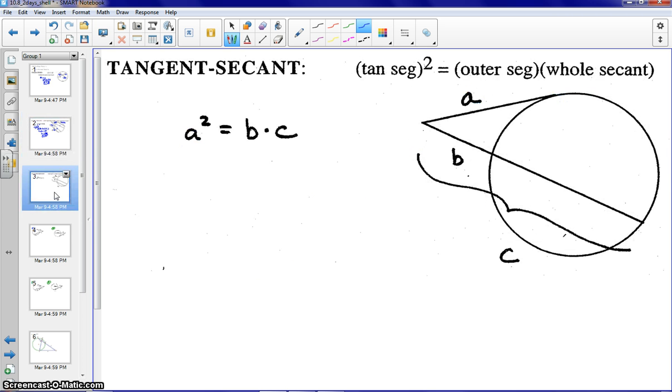The last power theorem is an example of a tangent-secant. So in this case, we have a tangent, A. And again, our secant is labeled just as in the previous theorem. The outer part is B, and the entire secant is C. So in this case, we'd have tangent squared equals outer times whole.